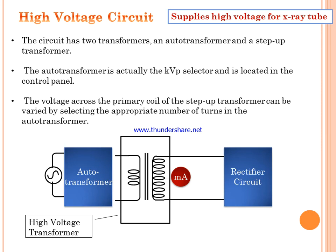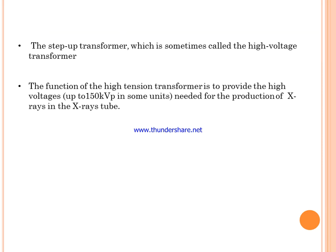The high voltage circuit supplies high voltage to the X-ray tube. It has two transformers: the auto transformer, which acts as the kVp selector located in the control panel, and the step-up transformer. The voltage across the primary coil of the step-up transformer can be varied by selecting the appropriate number of turns in the auto transformer.